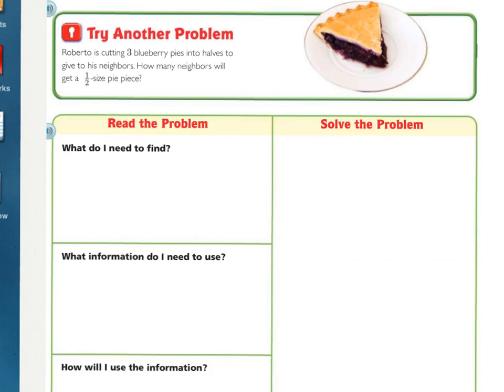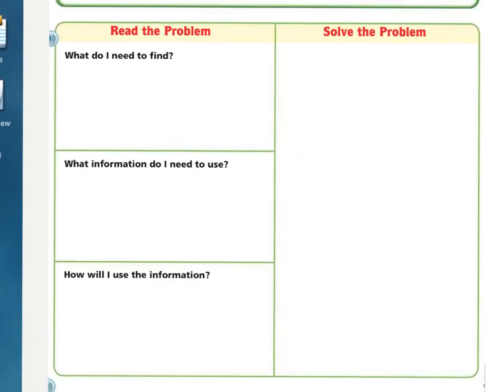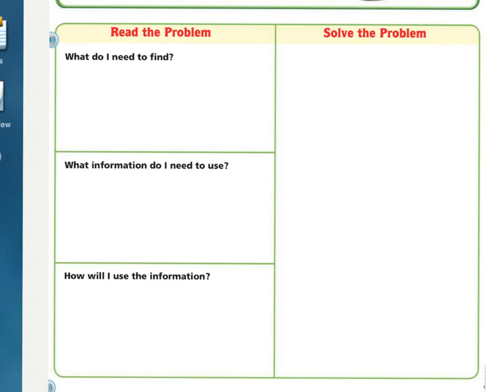Let's try another problem. Roberto is cutting three blueberry pies into halves to give to his neighbors. How many neighbors will get a one-half size pie piece? I want you to press pause, underline what you're being asked to find, circle the important information, and then see how much of this on the left-hand side you can fill in with your own sentences. So go ahead, press pause, and get to work.